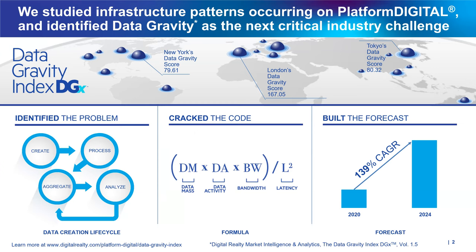We've been looking at the infrastructure patterns occurring within our four walls, and we see massive growth of data. We're thinking: what are people doing with this data? Where is it going? Can we start to predict what's happening? A gentleman by the name of Dave McCrory, about 10 years ago, coined the phrase 'data gravity,' talking about the mass of data and what that means. I'm fortunate enough to call Dave a colleague now — he's working with us at Digital Realty studying this phenomenon. We've actually published two editions of a study we refer to as the Data Gravity Index.